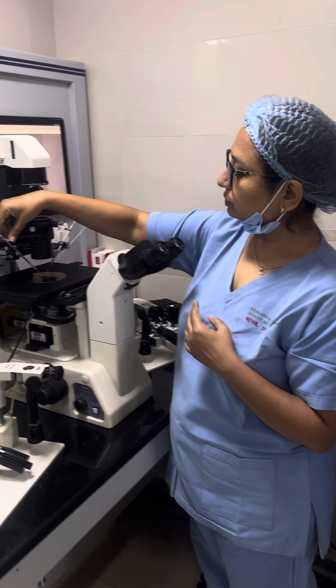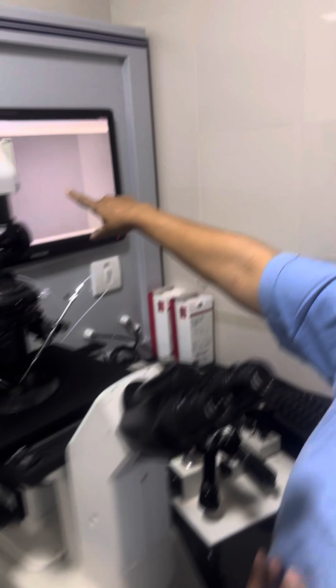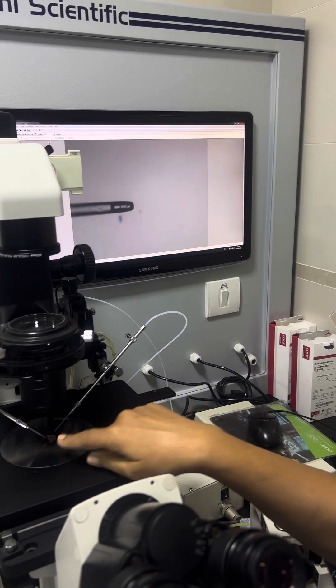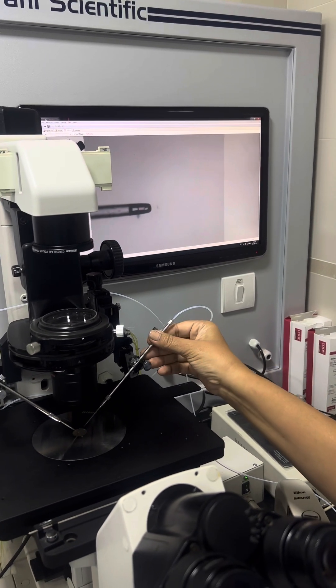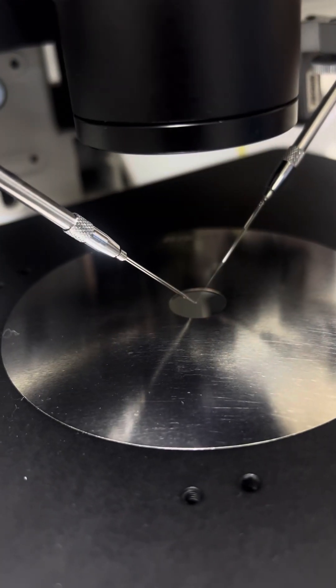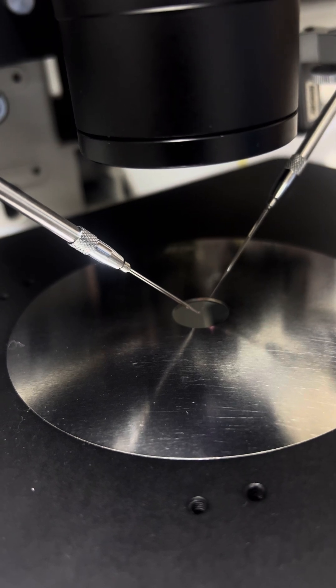And then first you have to adjust the holding pipette. The holding is the bigger pipette. You can use that pipette as a reference. And then you have to set the injection pipette.